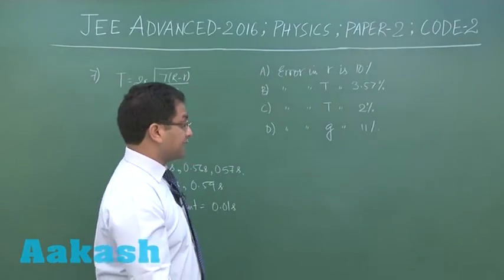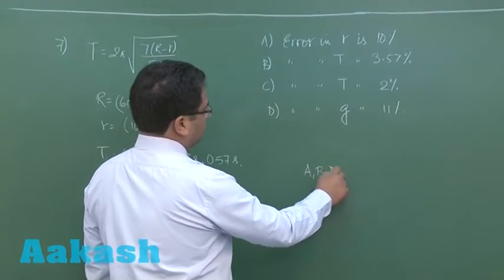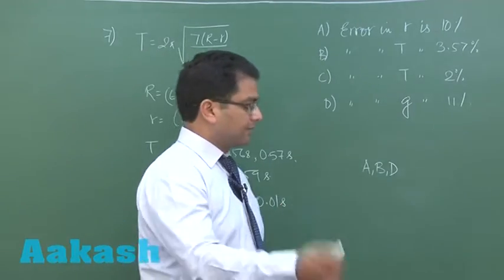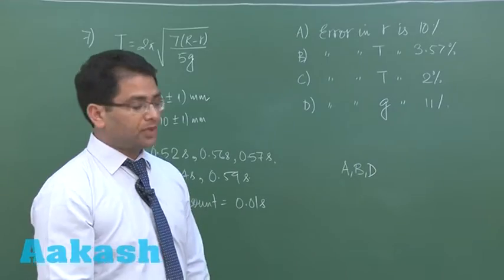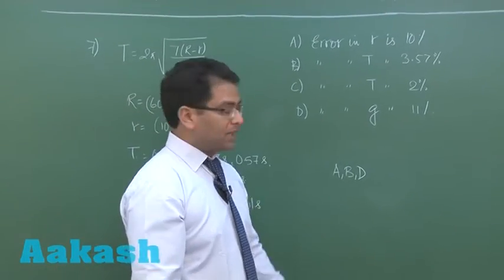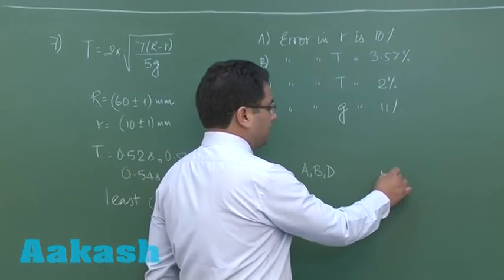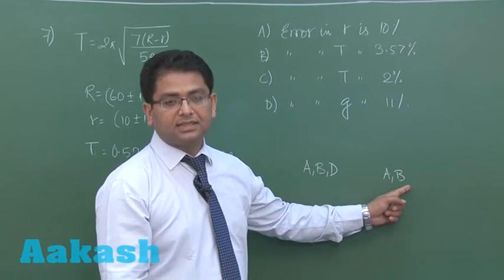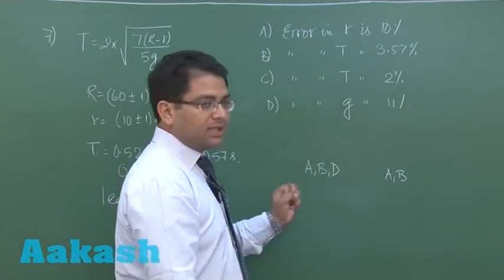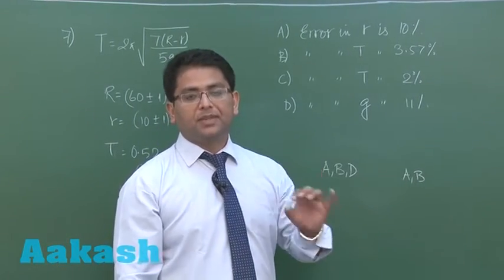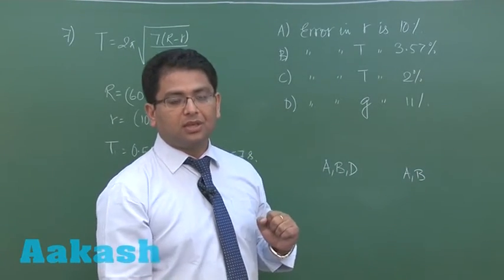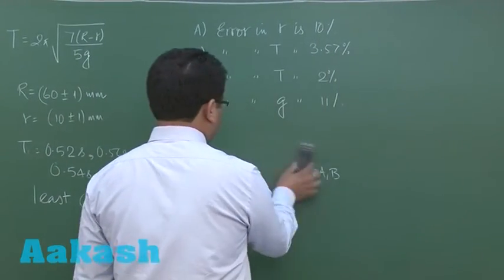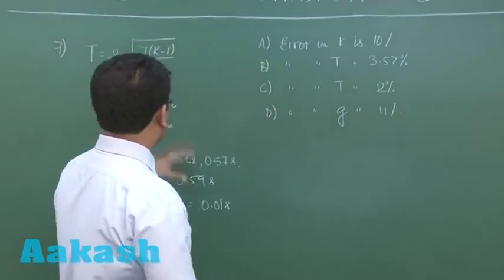Let me explain the marking scheme. For example, if the correct options are A, B, and D, bubbling all three awards plus four. There is also partial marking: bubbling only two correct options like A and B gives plus one each. However, if even one incorrect option is bubbled, the whole attempt gets negative marking of minus two. For no attempt, there are zero marks. You need strong confidence before attempting.